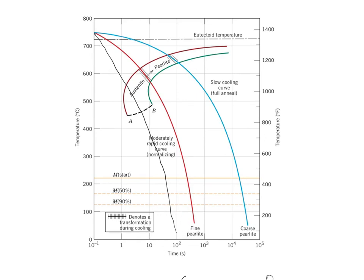Now, if we cool very rapidly, the answer is straightforward — you will end up with a martensite microstructure. One very important point: the lines representing martensitic transformation — the start line, the 50% line, and the 90% line — occur at identical temperatures in both the isothermal transformation diagram and the continuous cooling transformation diagram. Why? Because martensite transformation is a time-independent process — it doesn't depend upon time. That's the reason why these temperatures are the same in both kinds of transformation diagram.